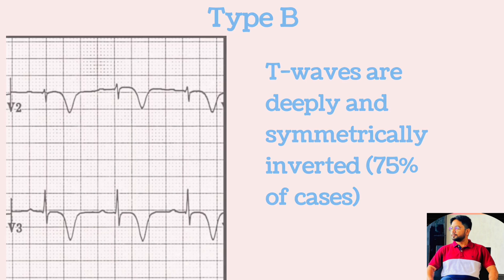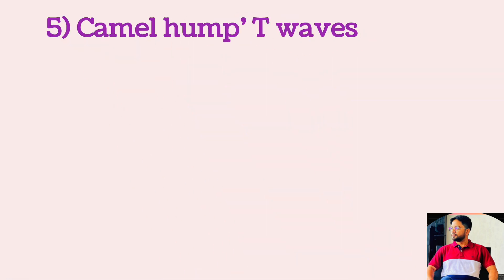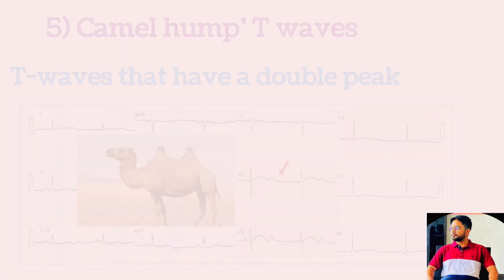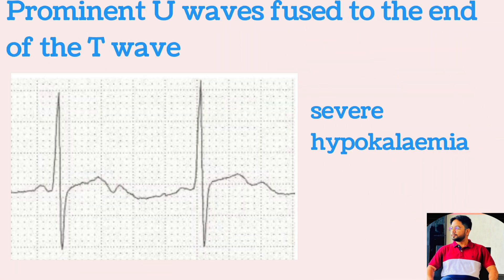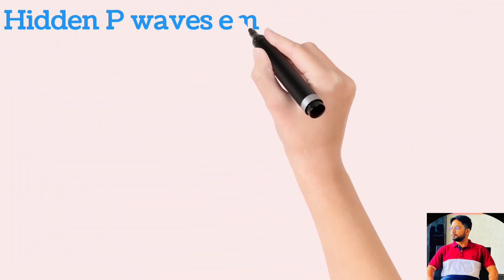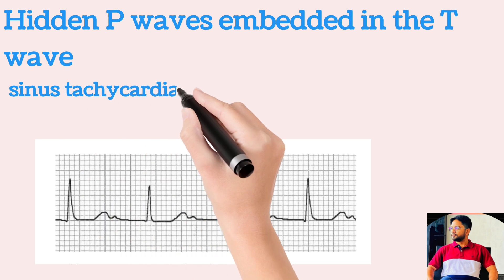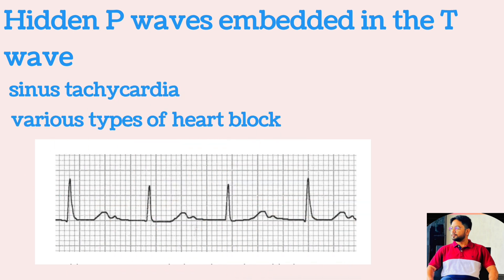Camel hump T-wave is a term used by Amal Mattu to describe T-waves that have a double peak. There are two causes: a prominent U-wave fused to the end of the T-wave as seen in severe hypokalemia, and hidden P-waves embedded in the T-wave as seen in sinus tachycardia and various types of heart blocks.